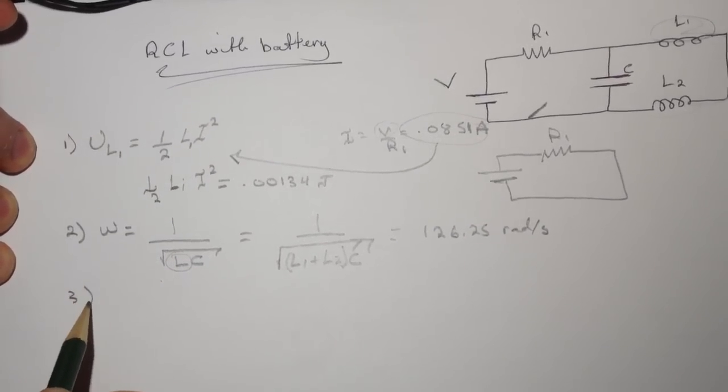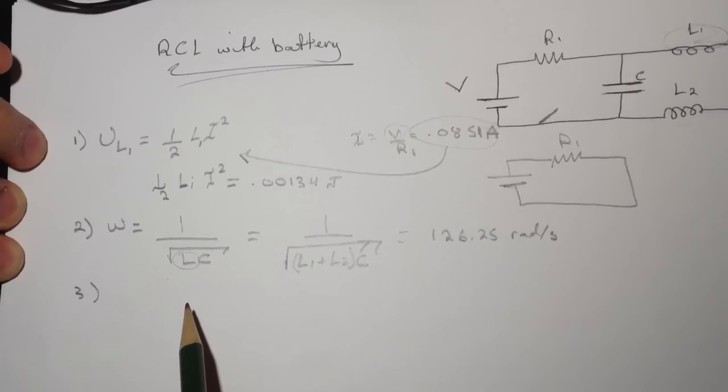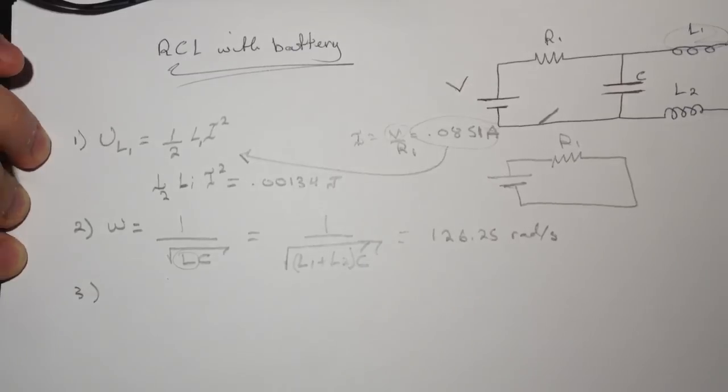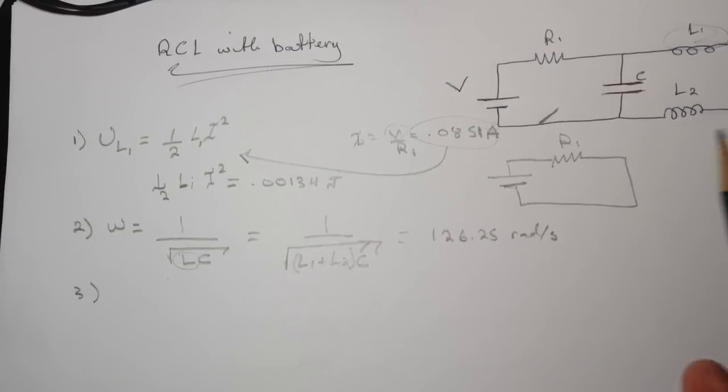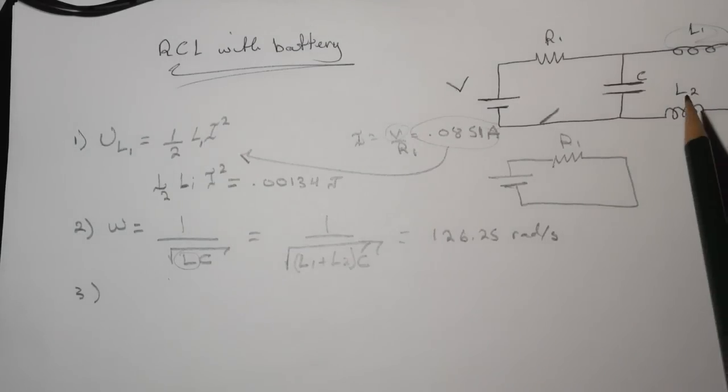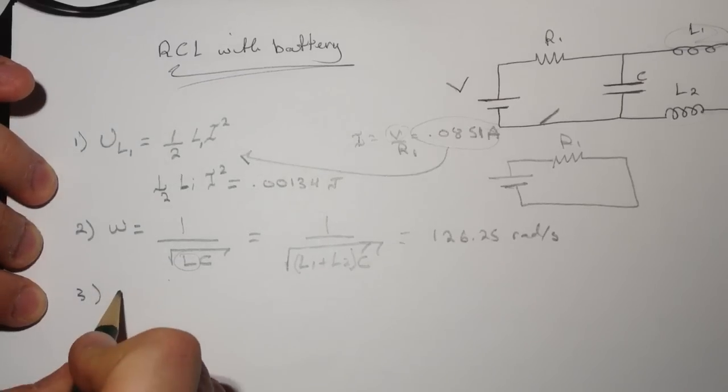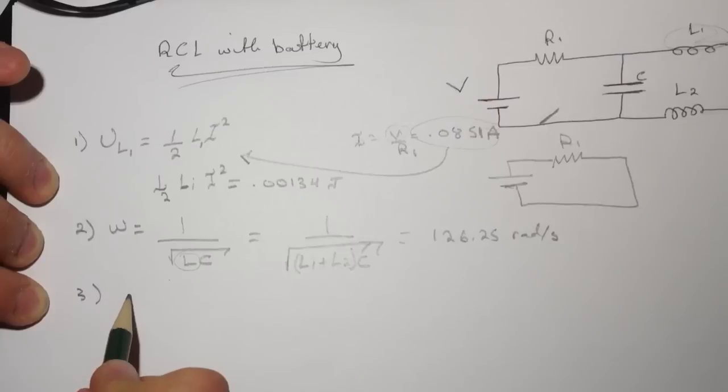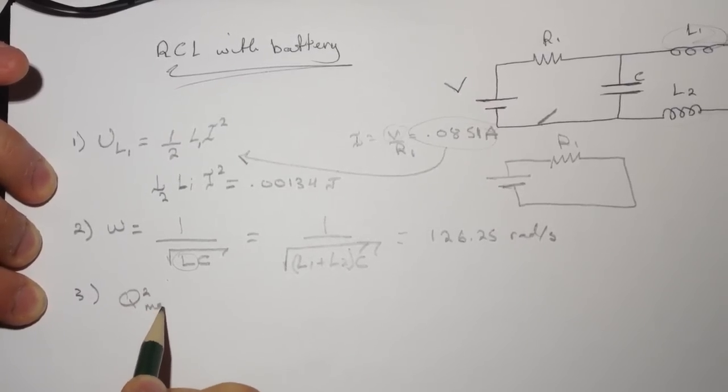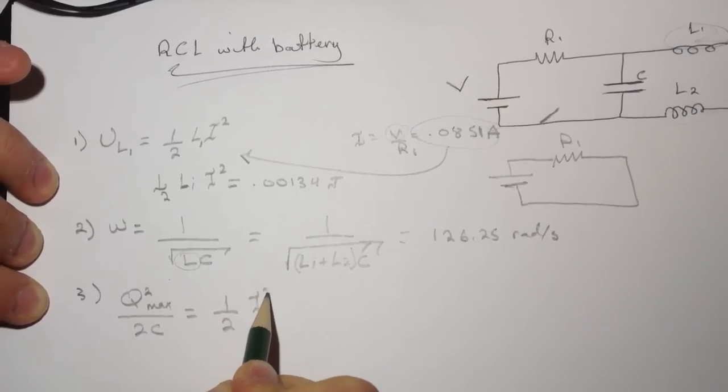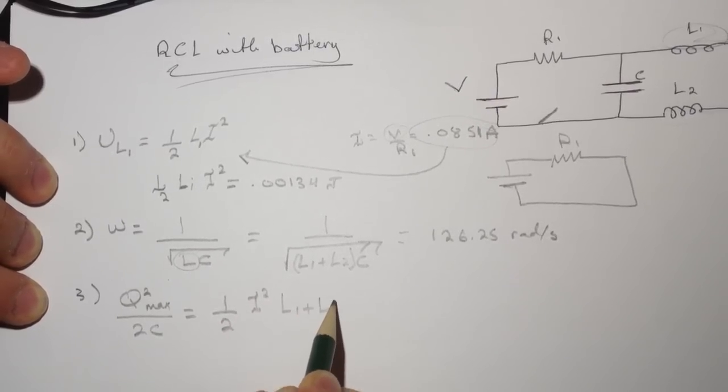The third question is asking what is Q_max, the magnitude of the charge on the capacitor. Since we know the current that's going through the inductor here, the two of them, we know that the energy is conserved in the system here. We can do that the energy in the two inductors is going to be equal to Q_max here. So Q squared max over 2C will be equal to half I squared L1 plus L2.